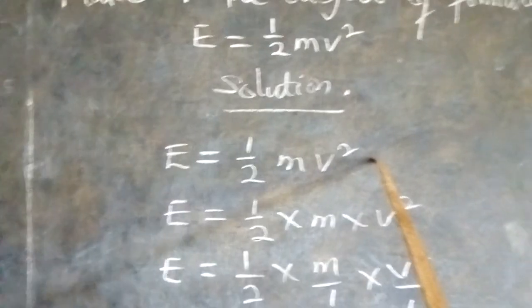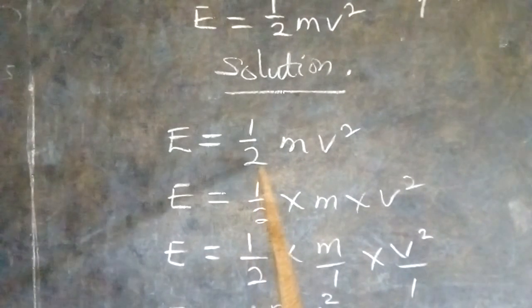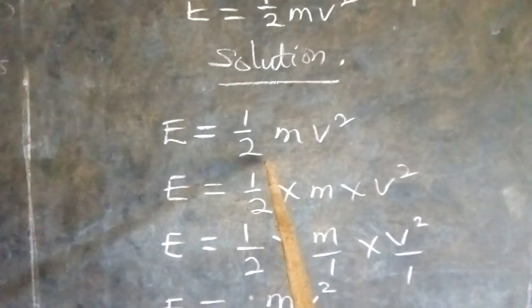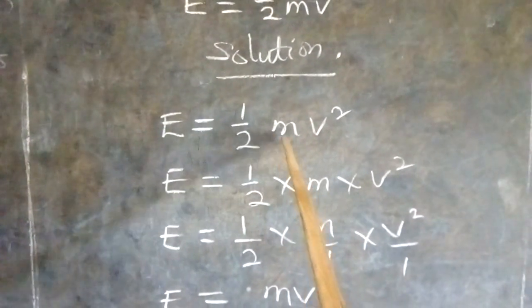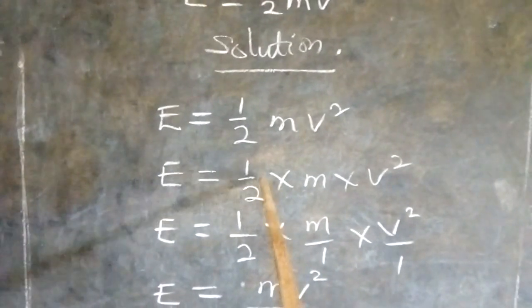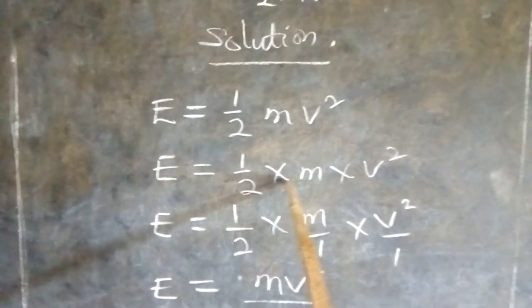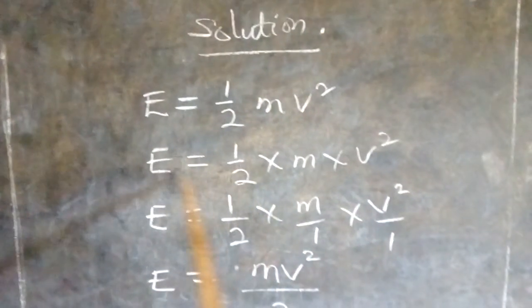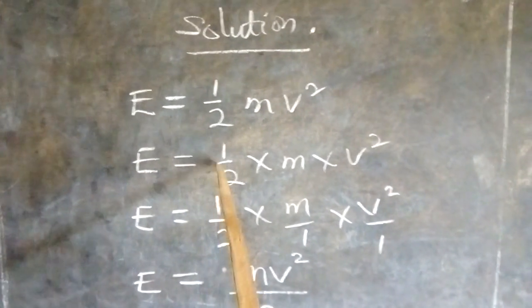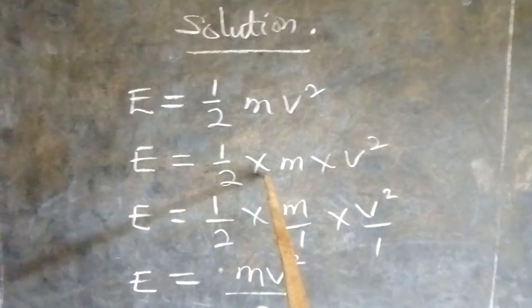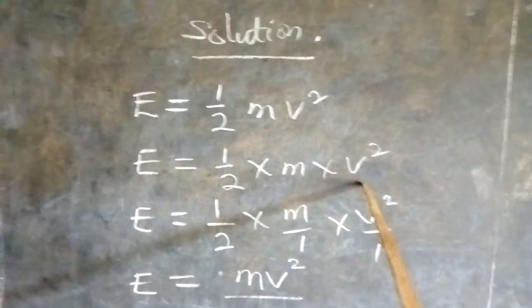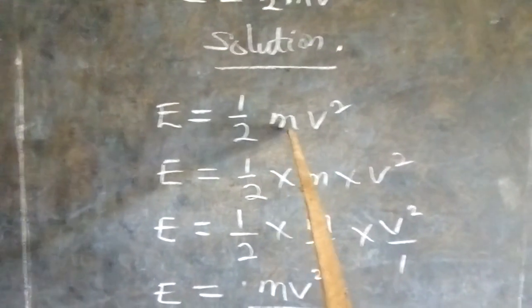Now, the next step to take is to express this the way it should be. Let us put the sign of multiplication there. E is equal to half times m times v squared. And that is exactly what half mv squared means.